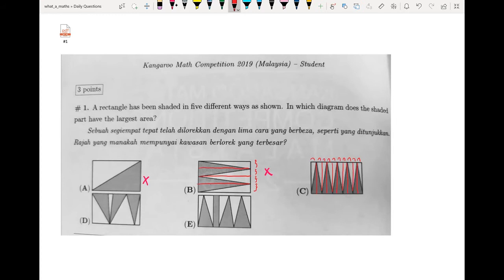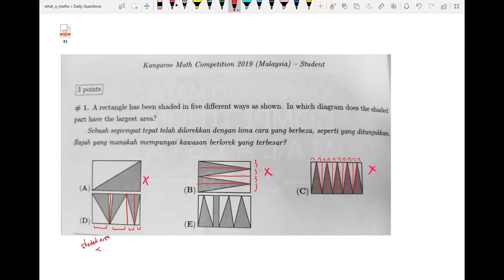I will cancel out C and now move to D. I'll do the same thing — break it into separate rectangles. Here I have the first, second, third, and fourth separate rectangles.